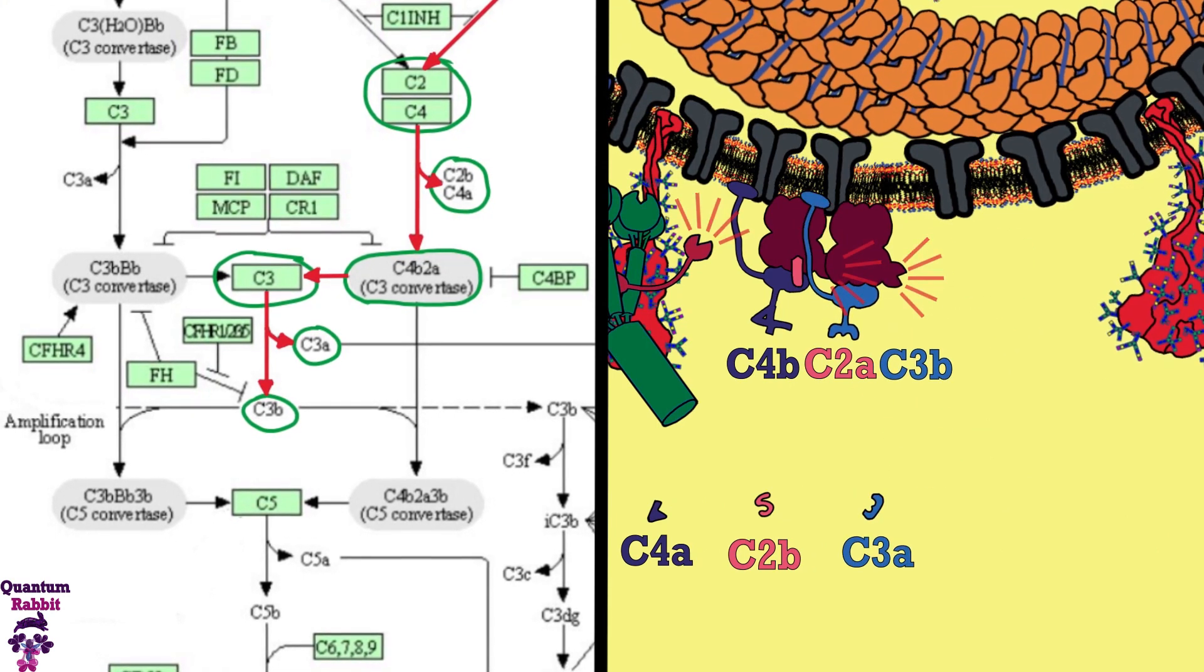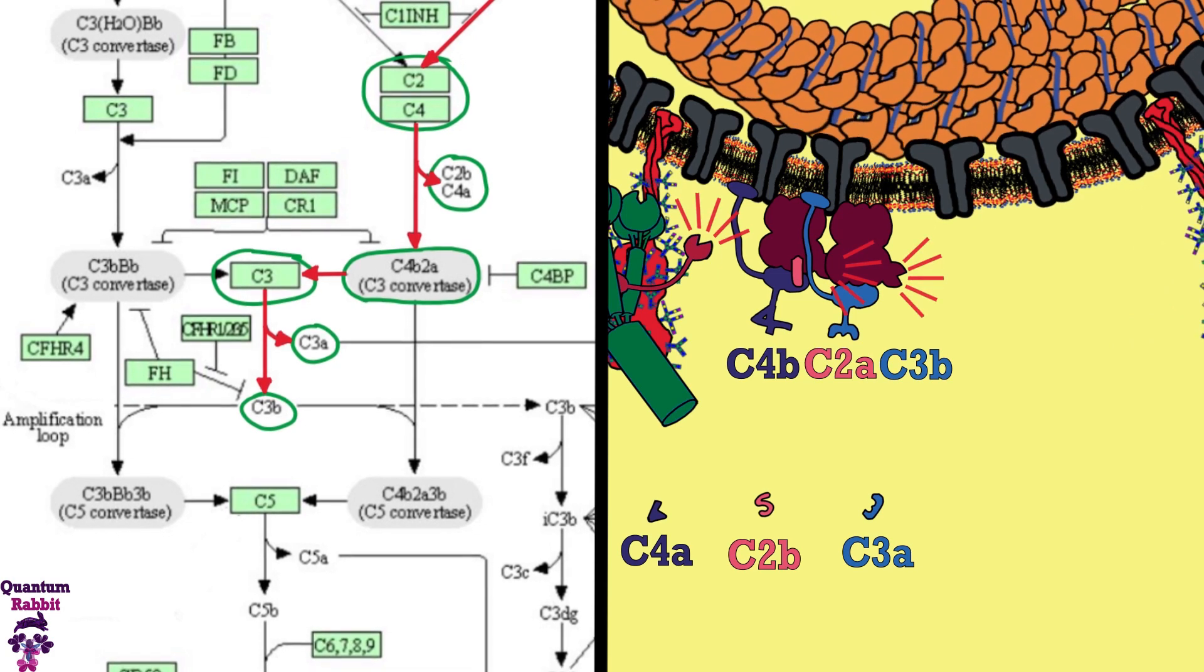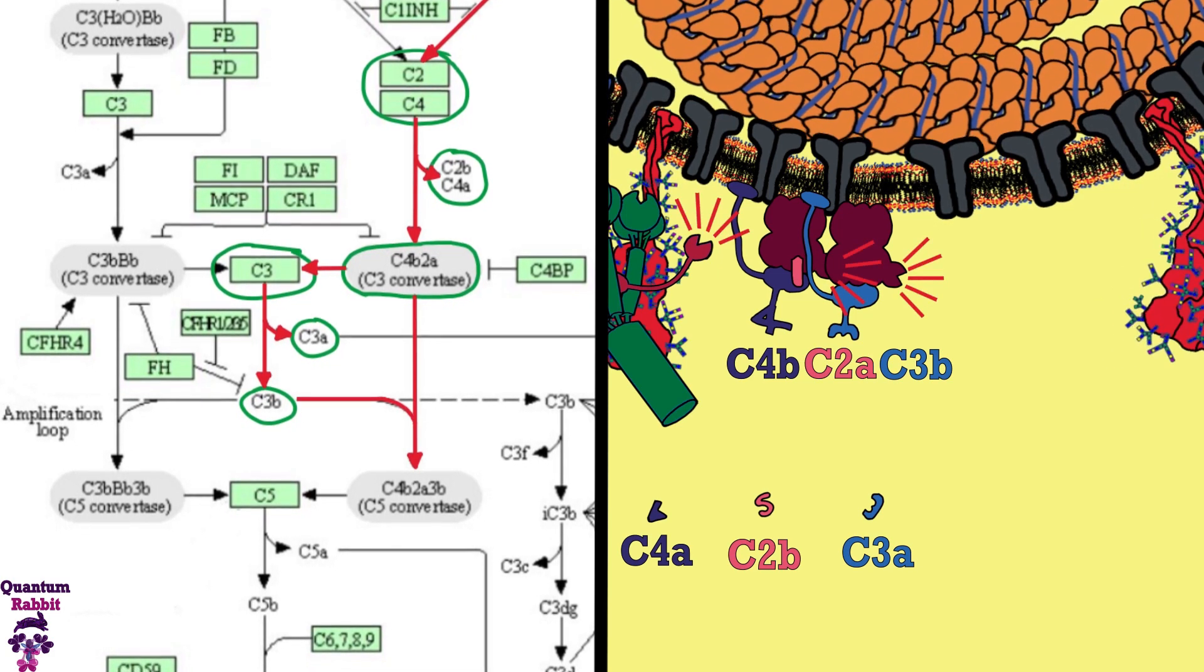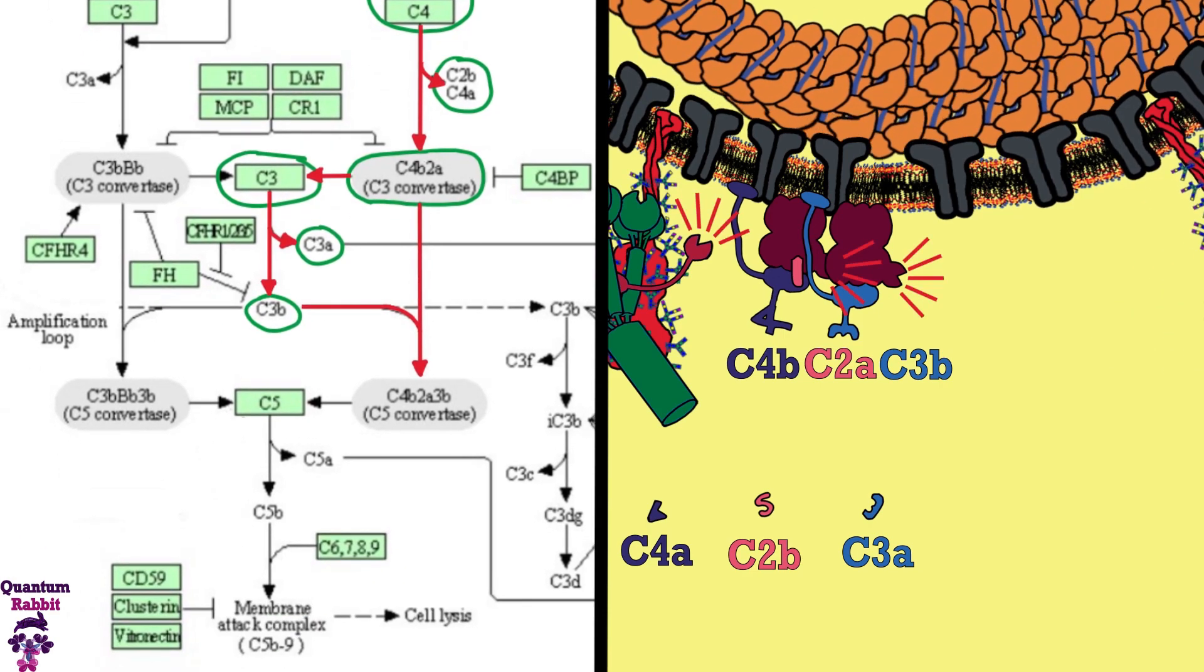C3b couples with C4b-C2a to form the C4b-C2a-C3b complex, called C5 convertase.